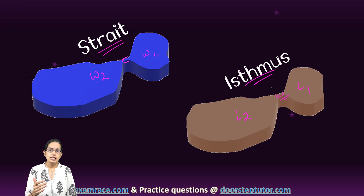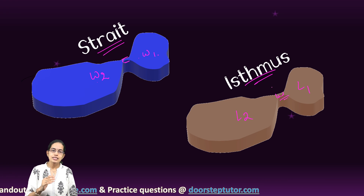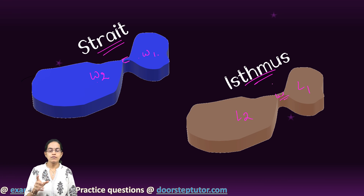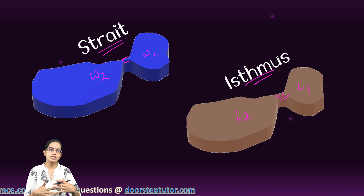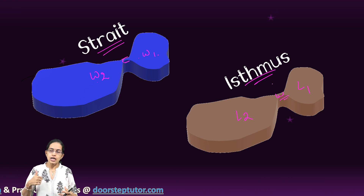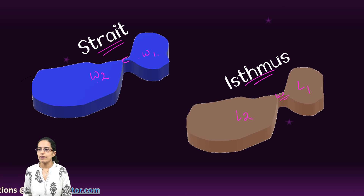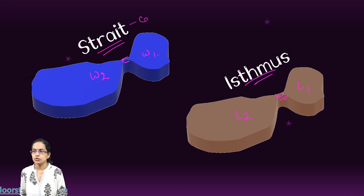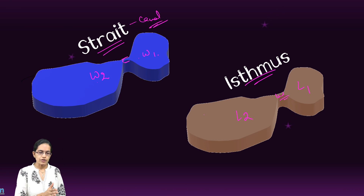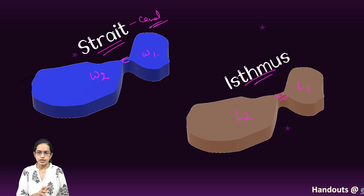An isthmus, on the other hand, is a parcel where you have fractures of the land. Through straits, canals would pass — we will understand that as we talk further.